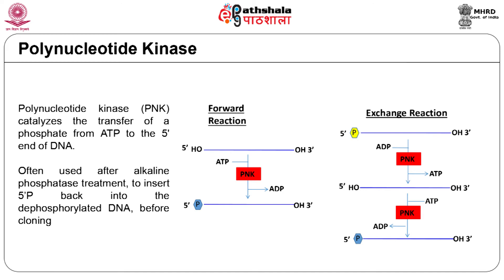In the exchange reaction, target DNA or RNA that has a 5 prime phosphate is incubated with excess ADP. Polynucleotide kinase will first transfer the phosphate from the nucleic acid onto an ADP, forming ATP and leaving a dephosphorylated target. Polynucleotide kinase will then perform a forward reaction and transfer a phosphate from ATP onto the target nucleic acid.